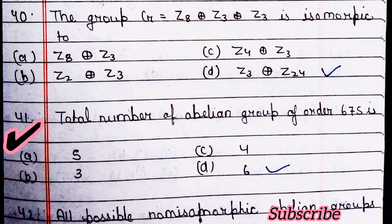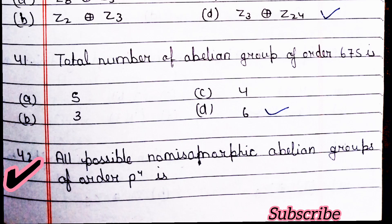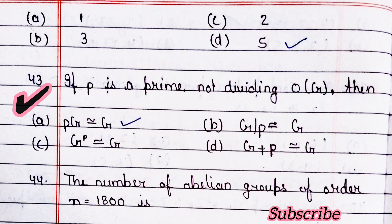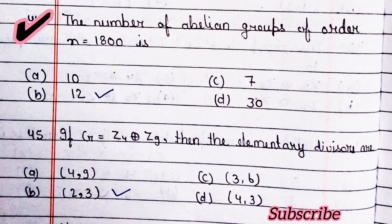Next question: the group G equal to Z8 direct sum Z3 direct sum Z3 is isomorphic to — option D is right. Next question: total number of abelian groups of order 675 is 6 — option D is right. Next question: all possible non-isomorphic abelian groups of order p^4 — option D is right. Next question: if p is prime not dividing group G then — option A is right.